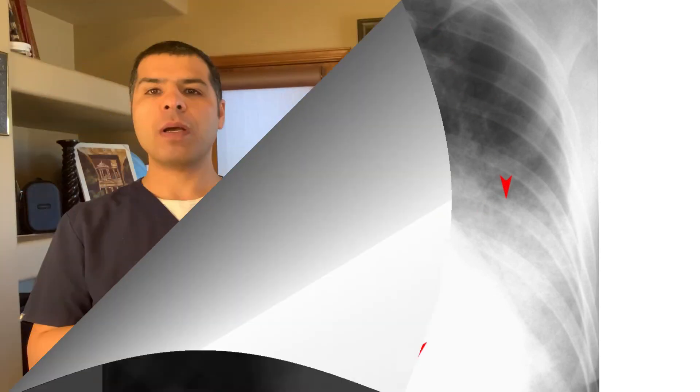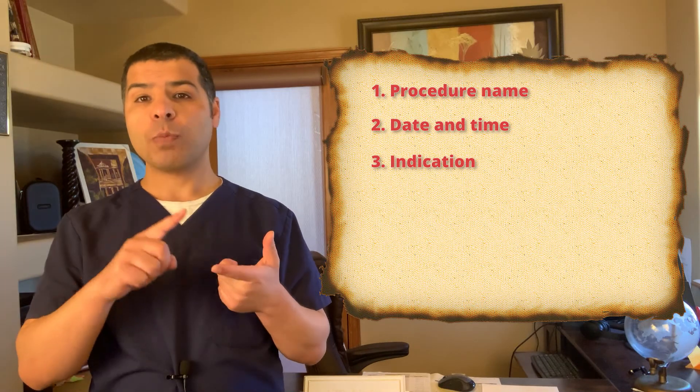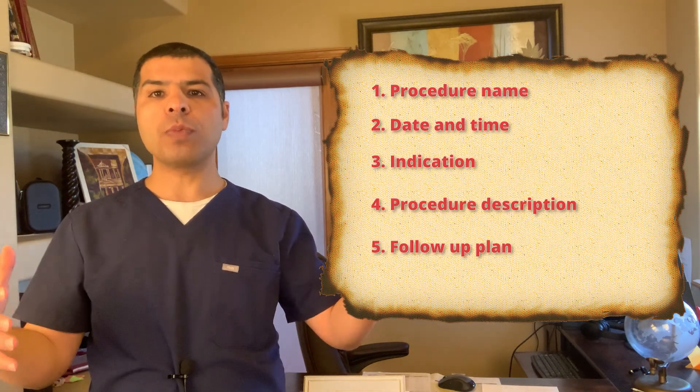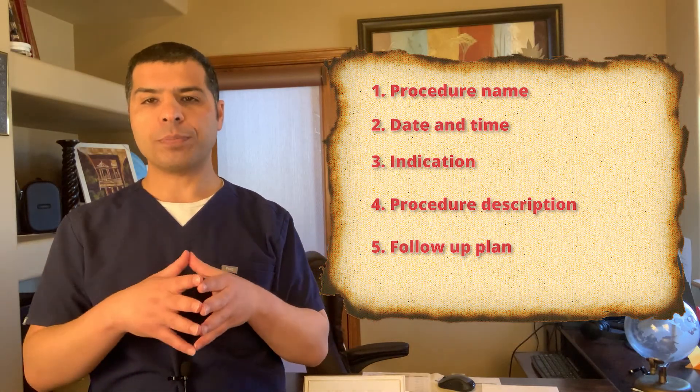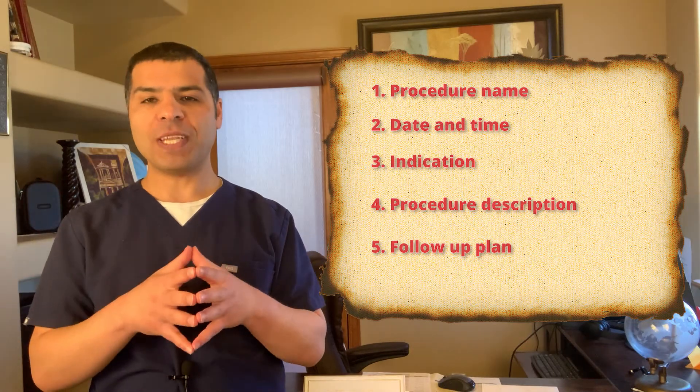Now let's talk about how to document this procedure in the patient chart. Documentation is simply a description of the procedure including failed attempts and any complications. Any procedure note should mention: the name of the procedure, date and time, indications, procedure description, and your follow-up plan — for example, noting ET tube placement followed by a chest x-ray.